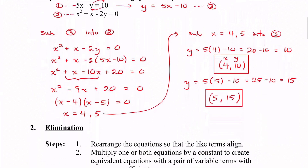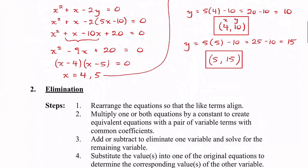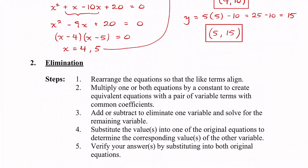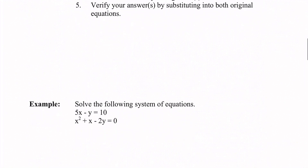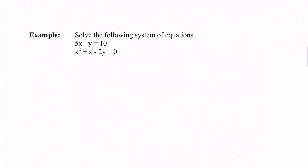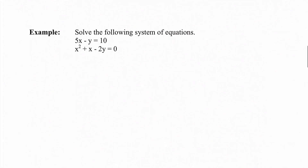The next method is the elimination method, which you would have seen before as well. The steps are on the page — pause the video to read through them if you like. On the next example, it says solve the following system: 5x minus y equals 10, and x squared plus x minus 2y equals 0.